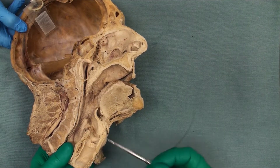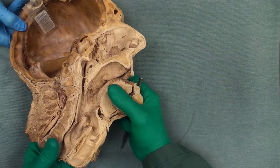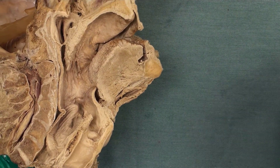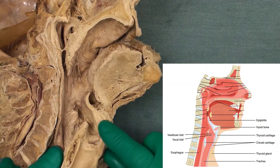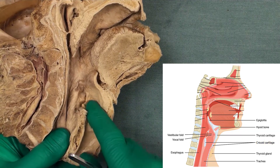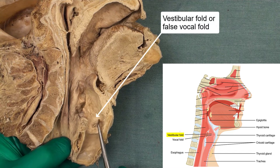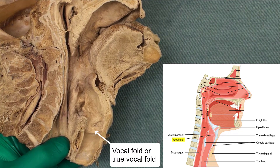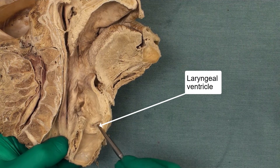Let's have a look at the interior of the larynx. This is a sagittal section of the larynx — here is the oral cavity. Zooming in for a better view of the interior of the larynx: here are the main cartilages — that is the epiglottis, then we have the thyroid cartilage, and then cricoid cartilage. Looking at the inside, on each side we have two folds: the upper one is called the vestibular fold or false vocal fold, and the lower one is called the vocal fold or true vocal fold.